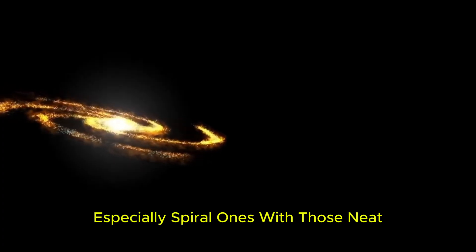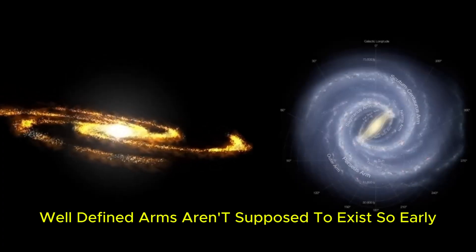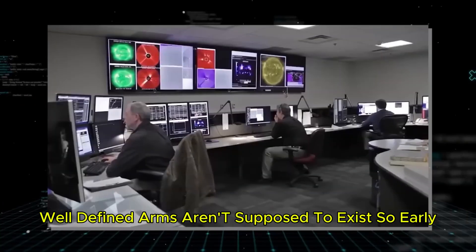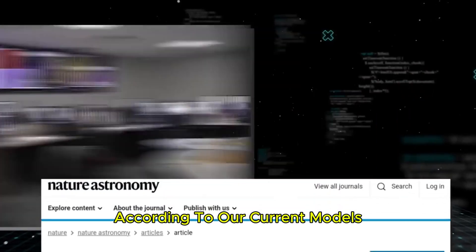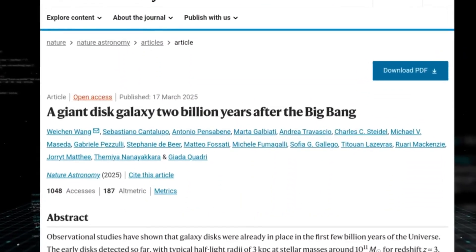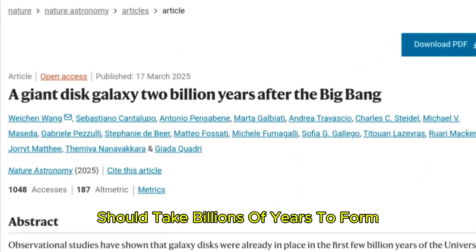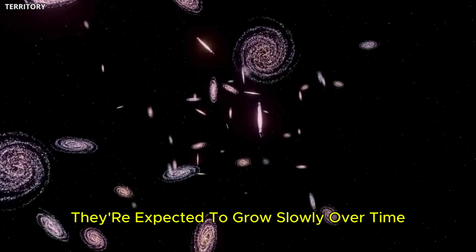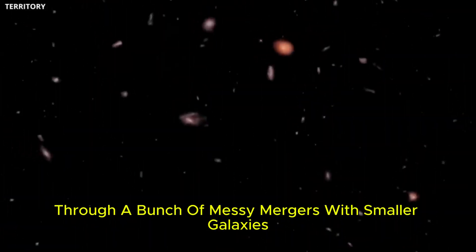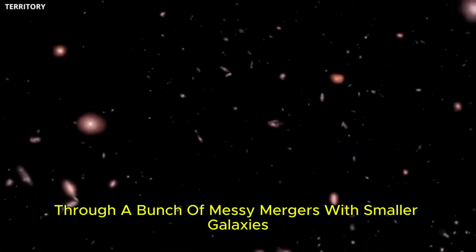Now, here's the part that's freaking scientists out. Galaxies like this, especially spiral ones with those neat, well-defined arms, aren't supposed to exist so early. According to our current models of how the universe evolved, these kinds of galaxies should take billions of years to form. They're expected to grow slowly over time through a bunch of messy mergers with smaller galaxies.